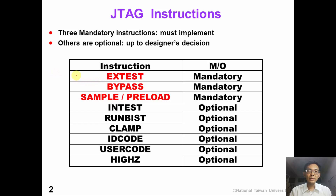In this table, we can see that in the JTAG standard, there are three mandatory instructions: external test or X-test, bypass, and sample and preload. Mandatory instructions must be implemented in the JTAG. There are six optional instructions, and they can be decided by the designer. In this video, we will first introduce the external test instruction followed by the bypass instruction.